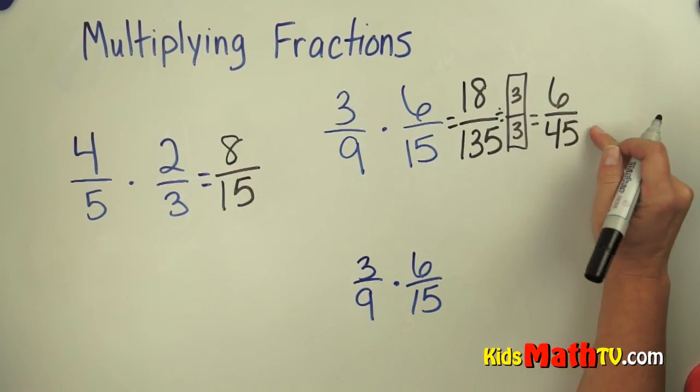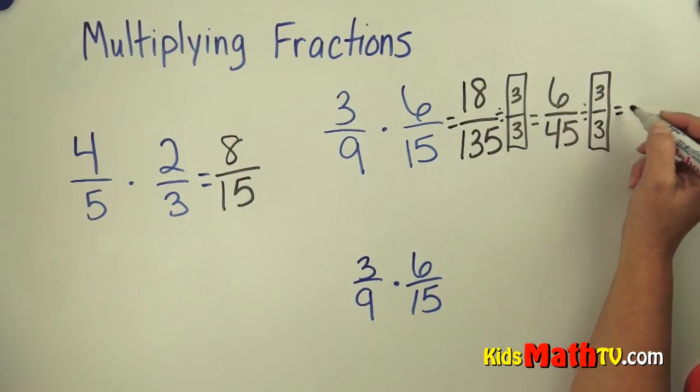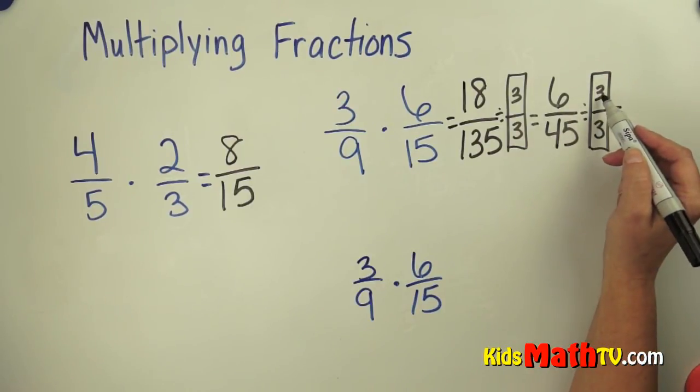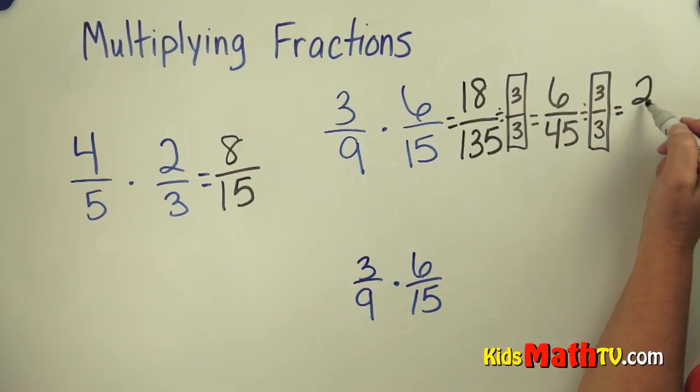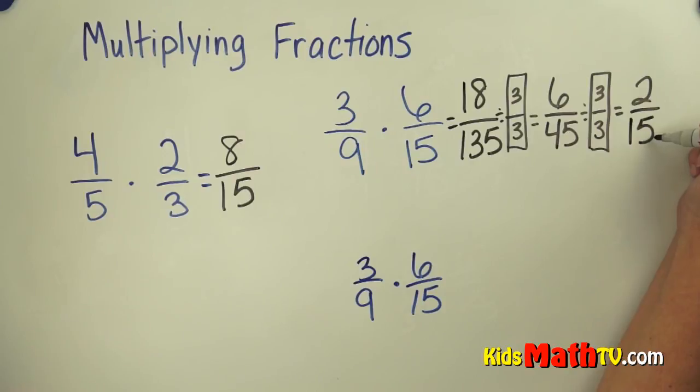And again we check, is there a number that will divide both 6 and 45? And I know that it will again divide by 3 over 3. 6 divided by 3 is 2. 45 divided by 3 is 15. 15 is not even, so it will not simplify any further. So we get 2 fifteenths.